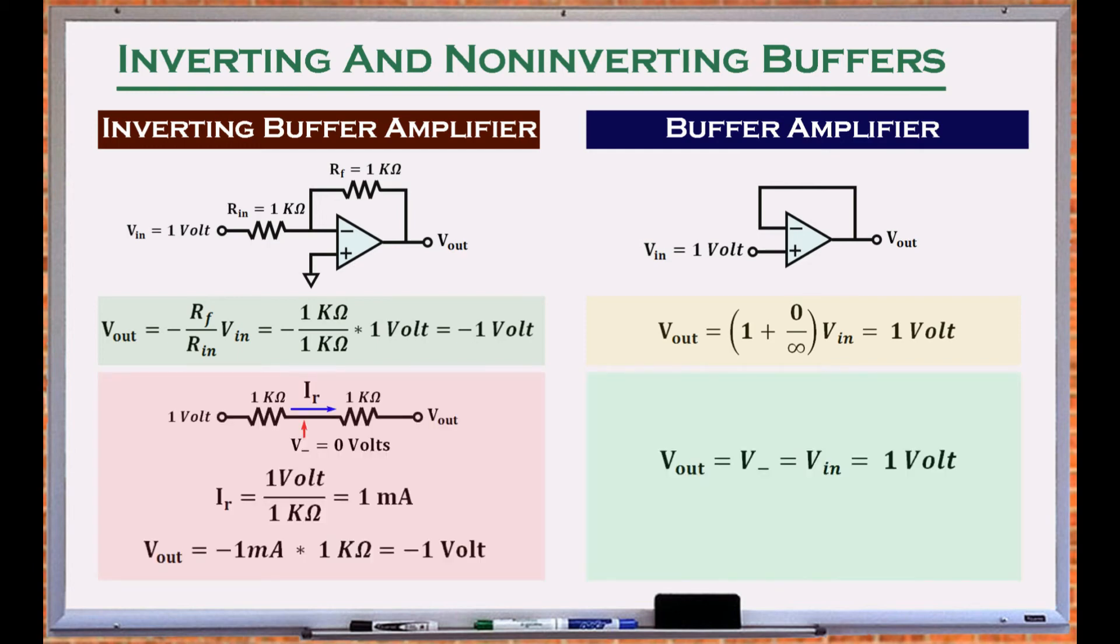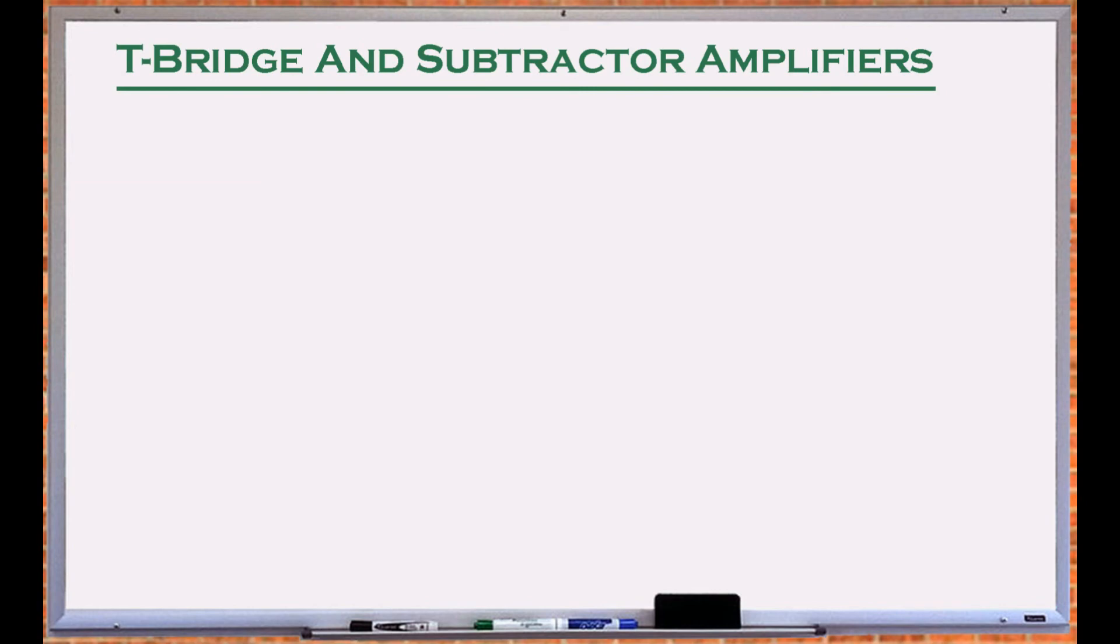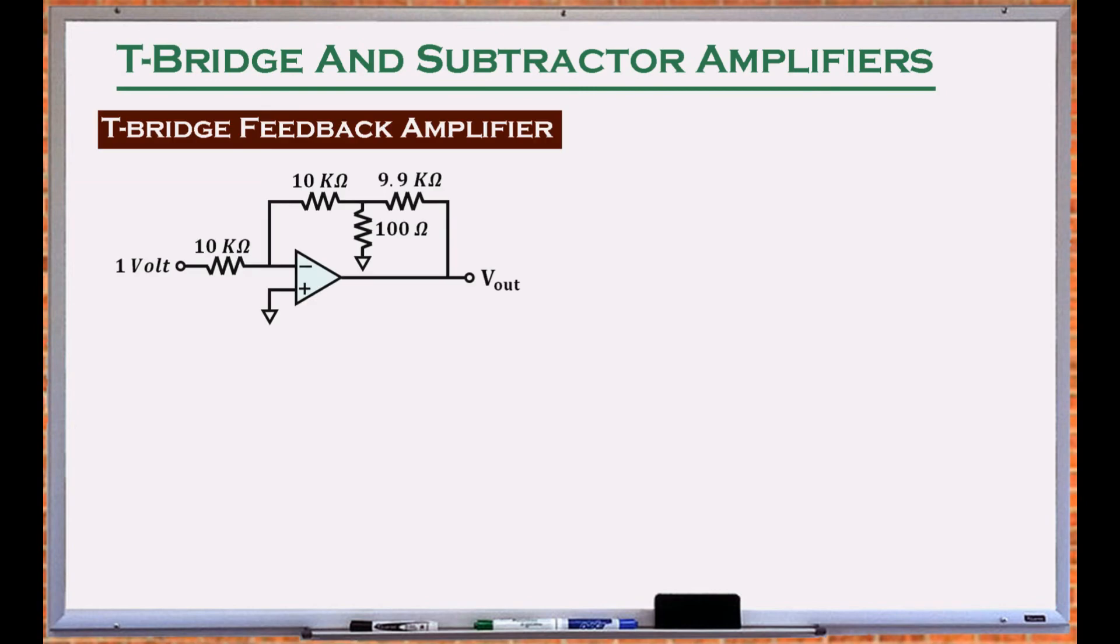Equations for other feedback configuration can also be derived based on the principles described earlier. This circuit can test our basic knowledge of operational amplifiers. Known as T-bridge feedback, this configuration is commonly used to eliminate the use of large feedback resistors.